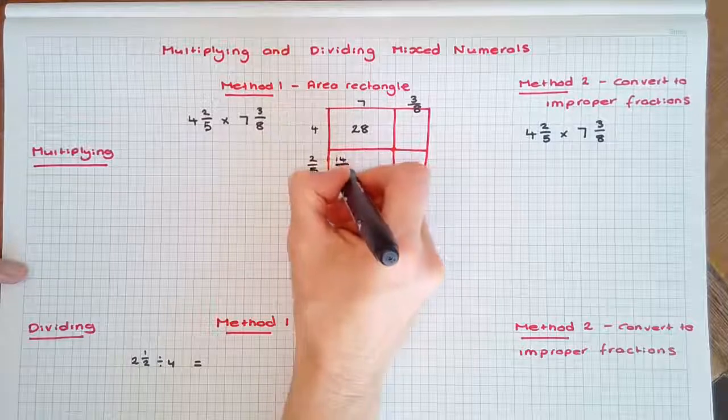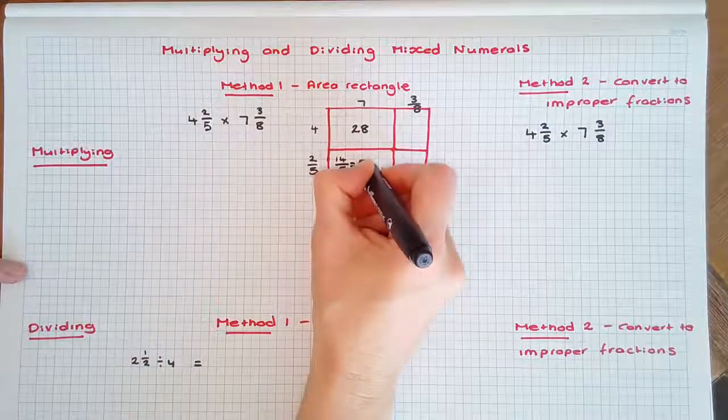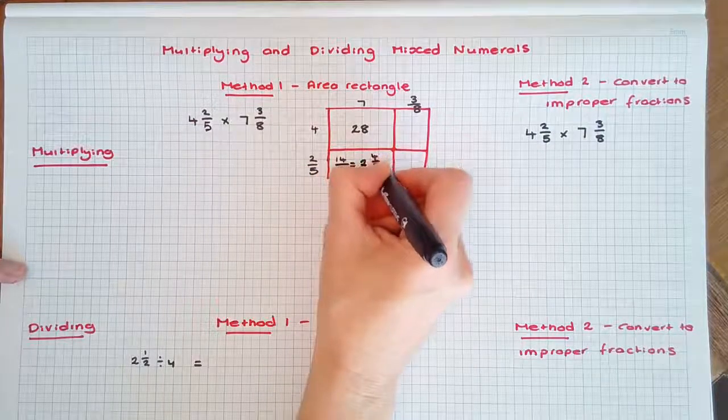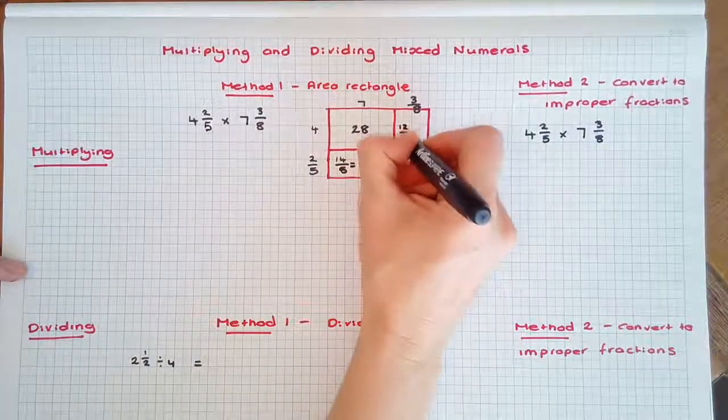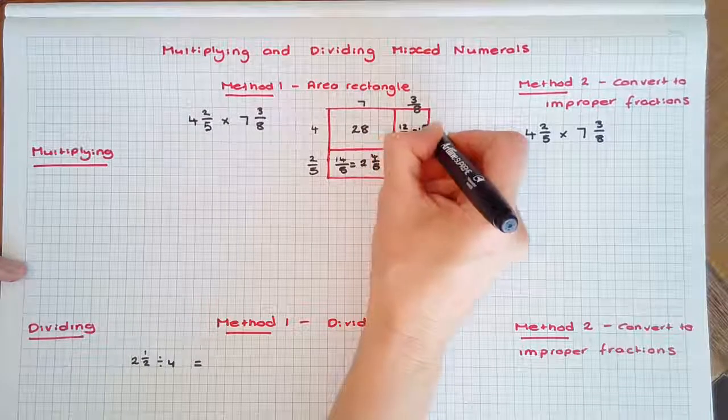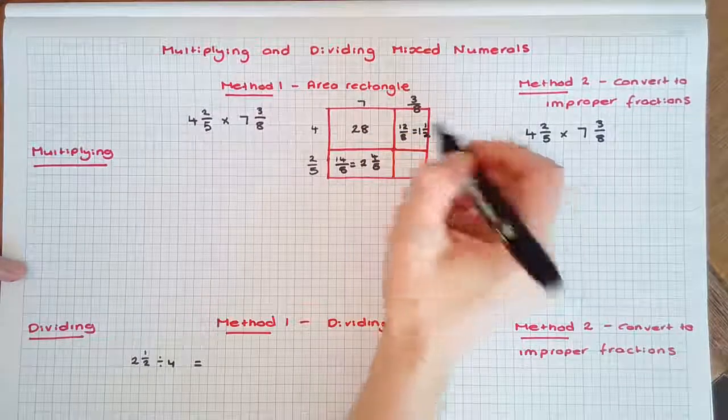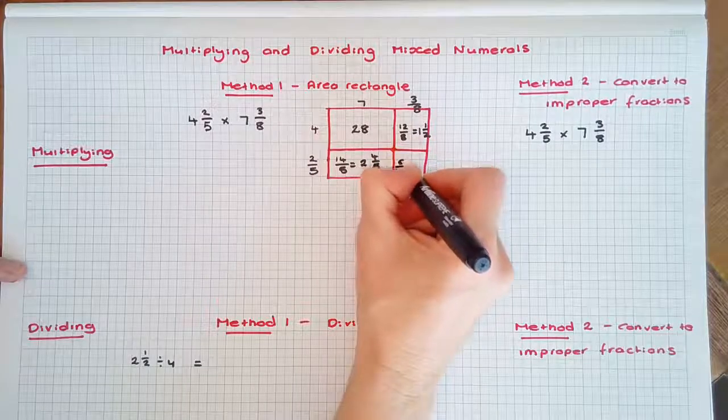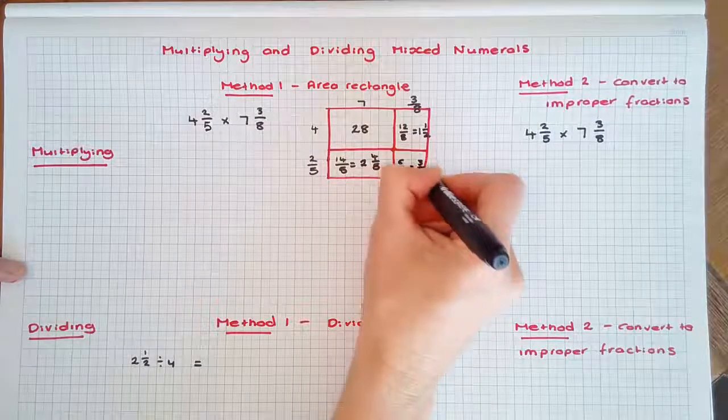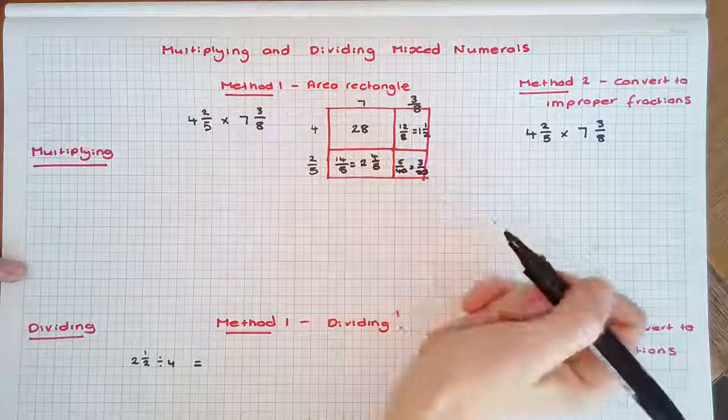is 14/5, or we could simplify to a mixed numeral of 2 4/5. 4 times 3/8 is 12/8, which simplifies to 1 1/2. And 3/8 times 2/5 is 6/40, which simplifies to 3/20. We've now found the area of each square.